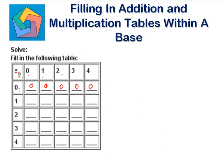Now the second row: 1 times 0 is 0. 1 times 1 is 1. 1 times 2 is 2. 1 times 3 is 3. 1 times 4 is 4.